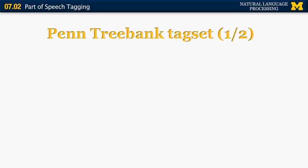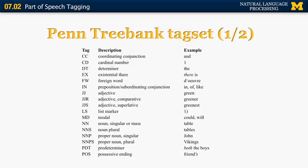For this class, we're going to use the Penn Treebank tagset. Some examples: CC is a coordinating conjunction like 'and'; CD is a cardinal number like 1 or 17; then determiner, existential 'there,' foreign word, and so on. Typically the first two characters denote the part of speech. For example, JJ is an adjective, and JJR is a comparative adjective — for example, 'greener.'